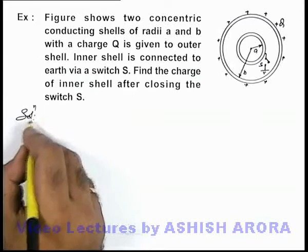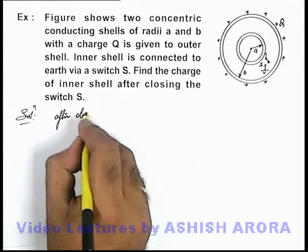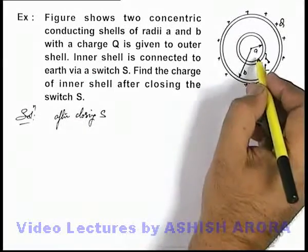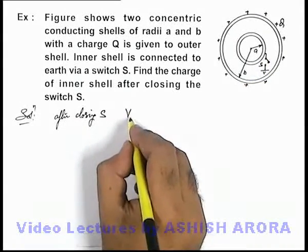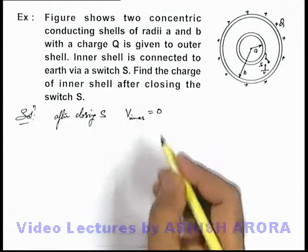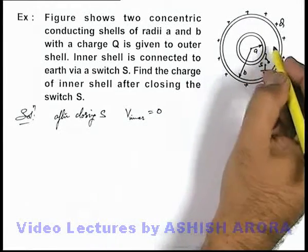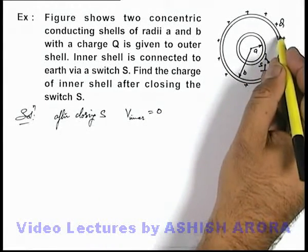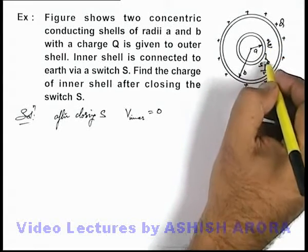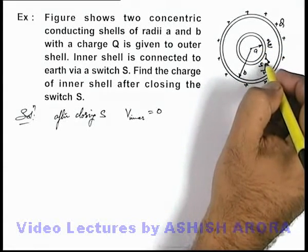In this situation, we know that after closing S, when the inner shell is connected to earth, the final potential of the inner shell should become zero. This is because of two charges: one is due to the charge on the outer shell, and the other is the charge Qe which is supplied by the earth after closing the switch.